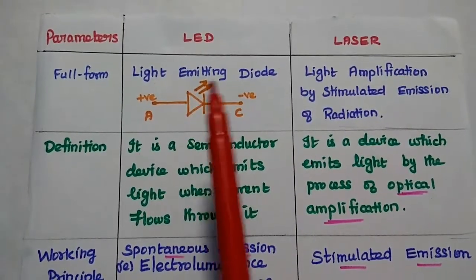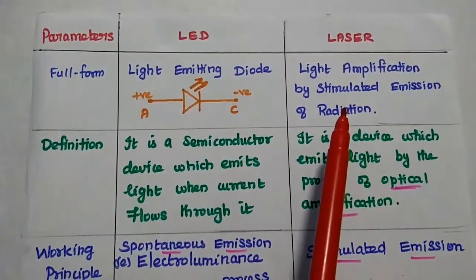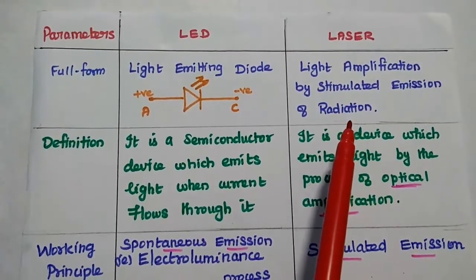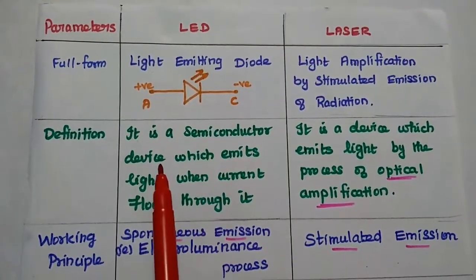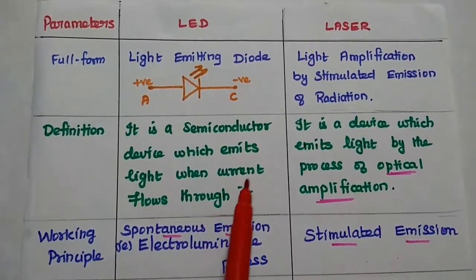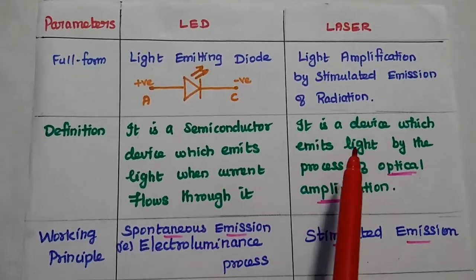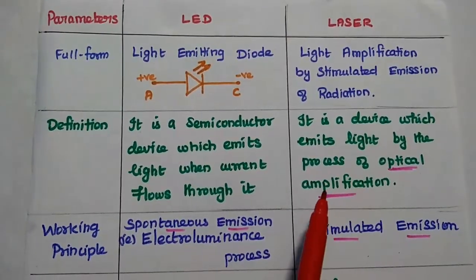LED means light emitting diode. Laser is light amplification by stimulated emission of radiation. LED is defined as a semiconductor device which emits light when current flows through it. Laser is a device which emits light by the process of optical amplification.